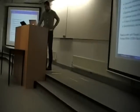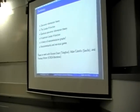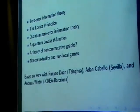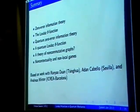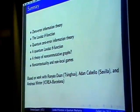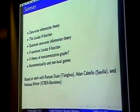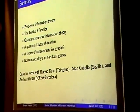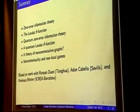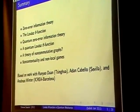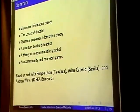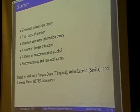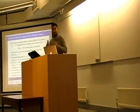Let me go through the summary. First, I will cover what zero-error information theory is — a theory started by Shannon in the 1950s about classical communication without allowing for errors. I will tell you about the Lovász theta function, go into the quantum setting, and describe what mathematical tools are needed to study the quantum version of zero-error theory, then talk about some non-local games and non-contextuality ideas. The talk is based on work done together with Runyao Duan, Adam Cappello, and Andreas Winter.